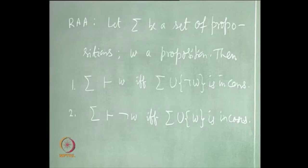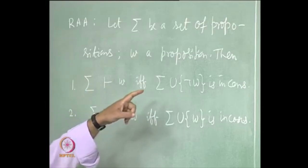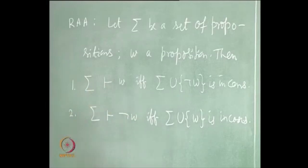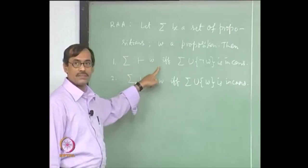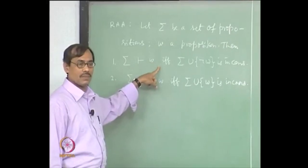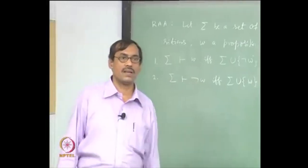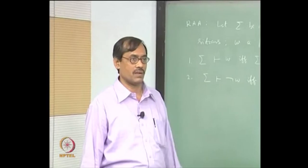That is how we had formulated it — it may not be exact words, but that is how it was. We wanted to show the first one. In this one, part is quicker. The part is: suppose you assume sigma entails w. That means you have a proof where w is the last line and premises might have been used from sigma alone.